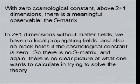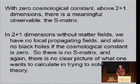Zero cosmological constant is the borderline. And above 2 plus 1 dimensions, it has a meaningful observable, which is the S-matrix. But it doesn't really work in 2 plus 1 dimensions.